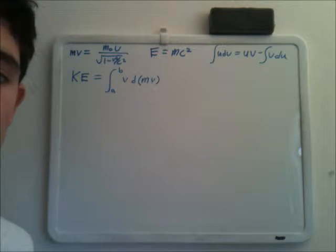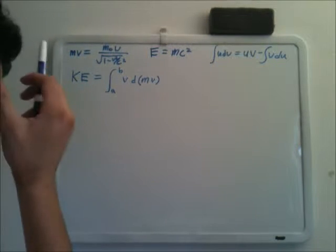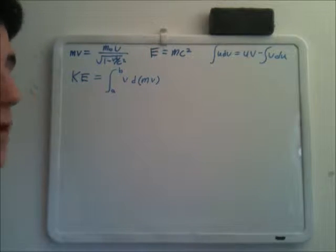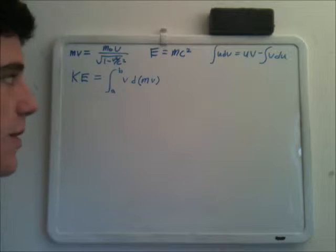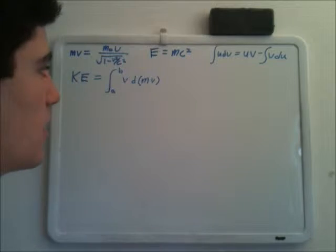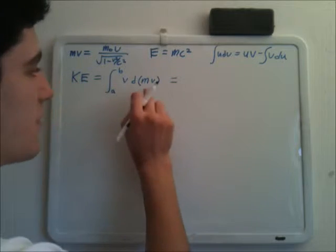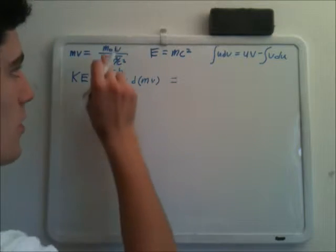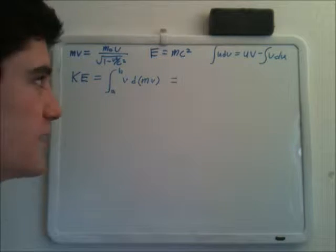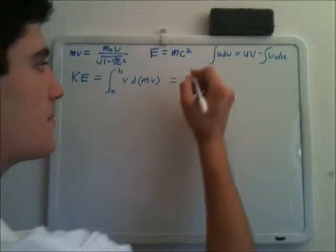So where I left off, we had this equation for kinetic energy, where it's the definite integral of velocity with respect to momentum. However, in relativistic physics, we have a new equation for momentum — mv — where it's m₀v over the square root of 1 minus v squared over c squared, because mass can change with velocity.